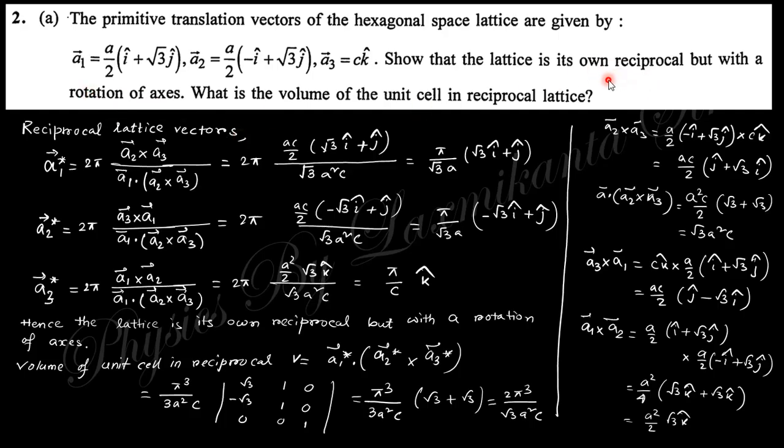Show that the lattice is its own reciprocal but with a rotation of axis. That means we need to find out the reciprocal of this lattice vector and see that these are the same reciprocal with a rotation. Then we need to find out the volume of the unit cell in reciprocal lattice.